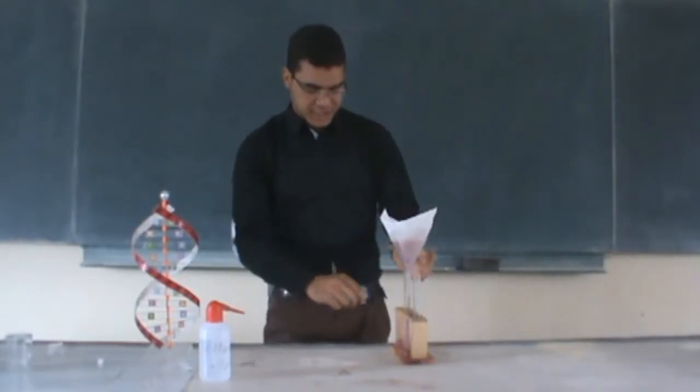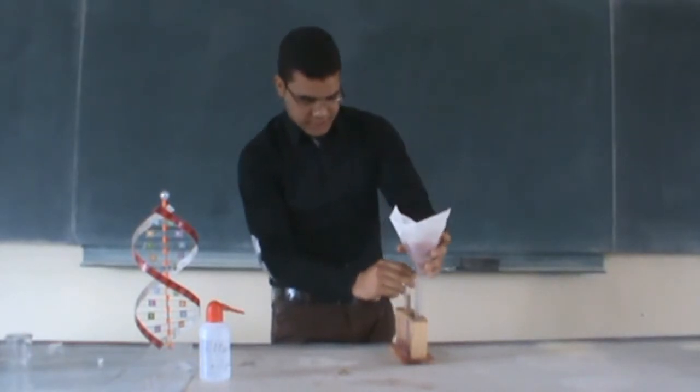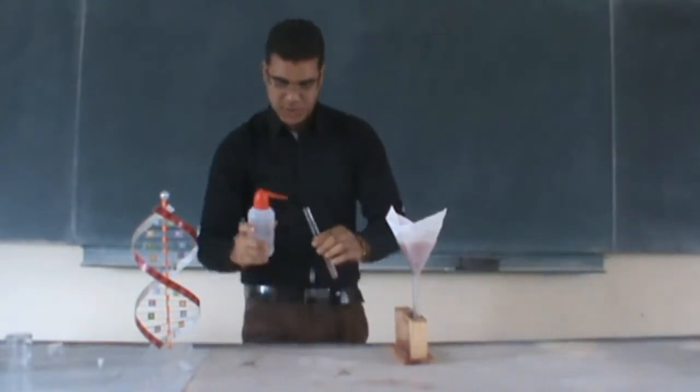After we have the filtrate, we add 5ml of alcohol into the solution and we will wait to see what's going to happen.